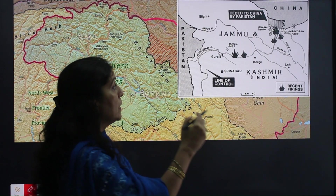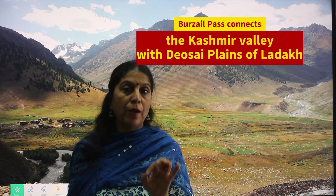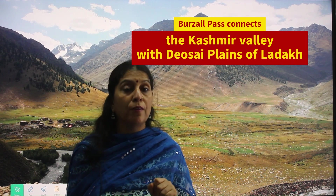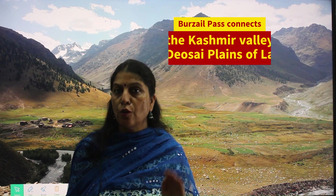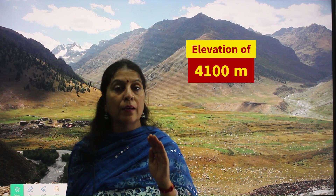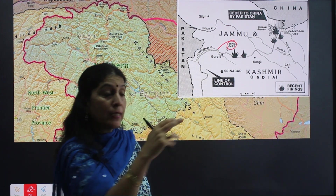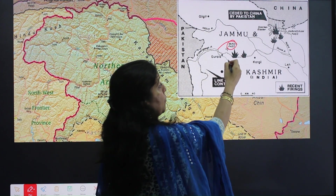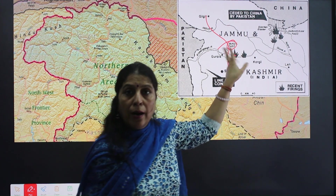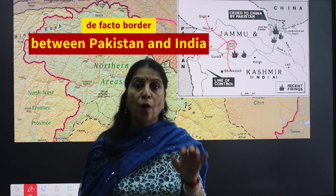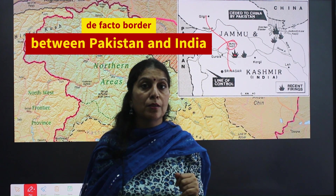The next pass is Burzil pass, which connects the Kashmir valley with the Deosai plains of Ladakh. It is situated at an elevation of 4100 meters above sea level. Burzil pass is an ancient pass and a caravan route from Srinagar to Gilgit. This pass serves as a de facto border between India and Pakistan in the Kashmir disputed region.